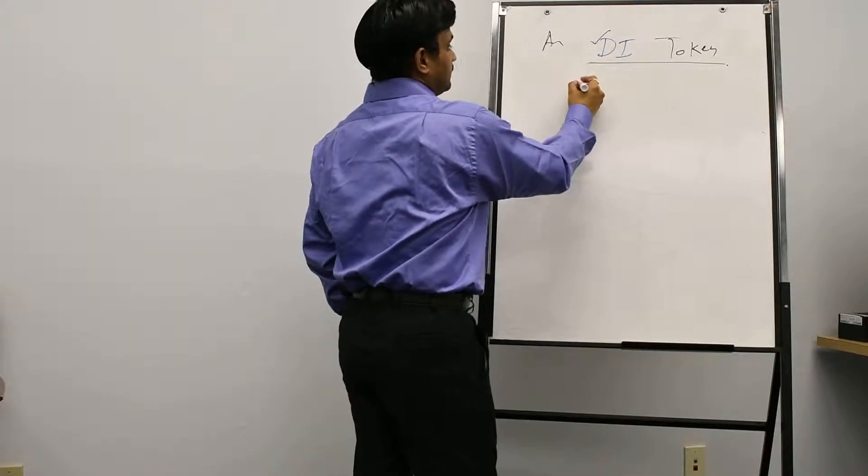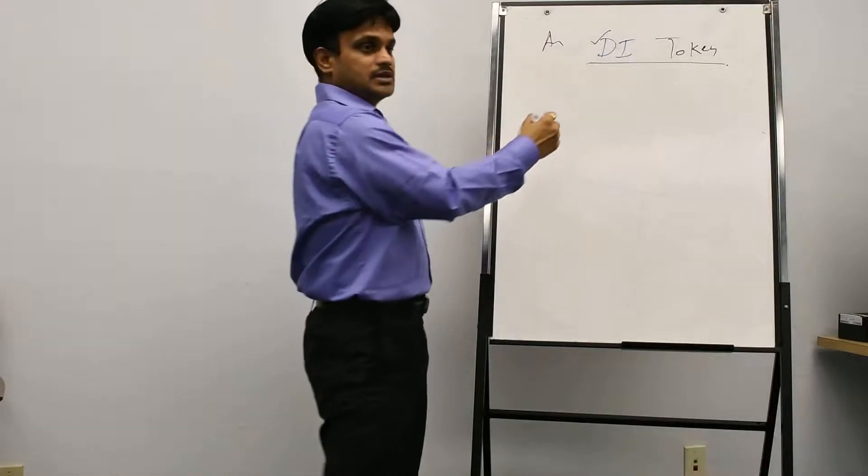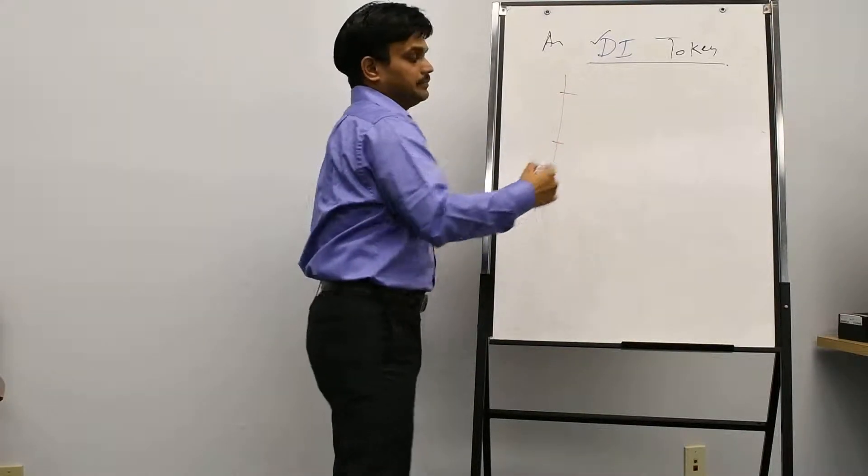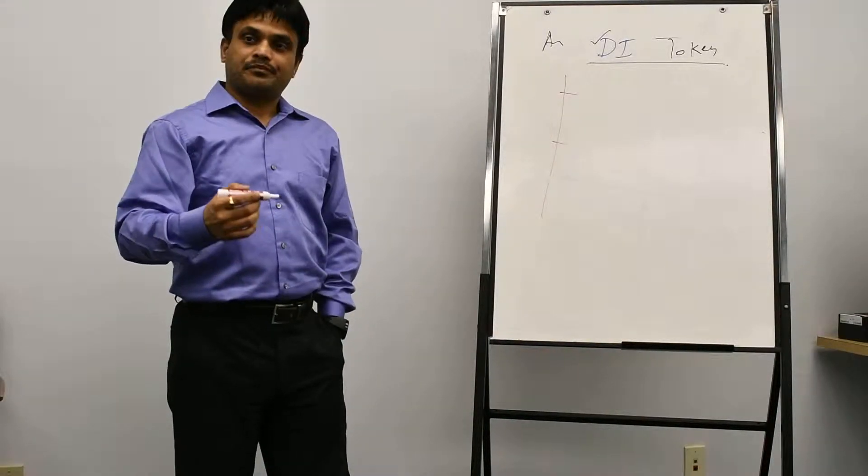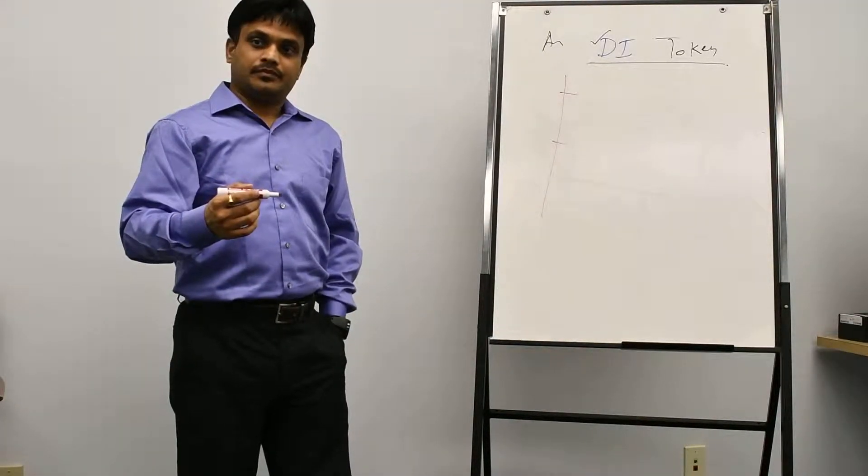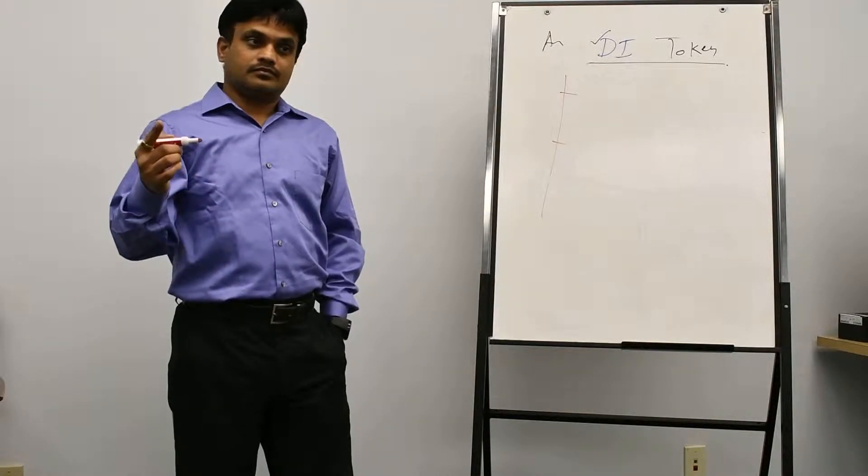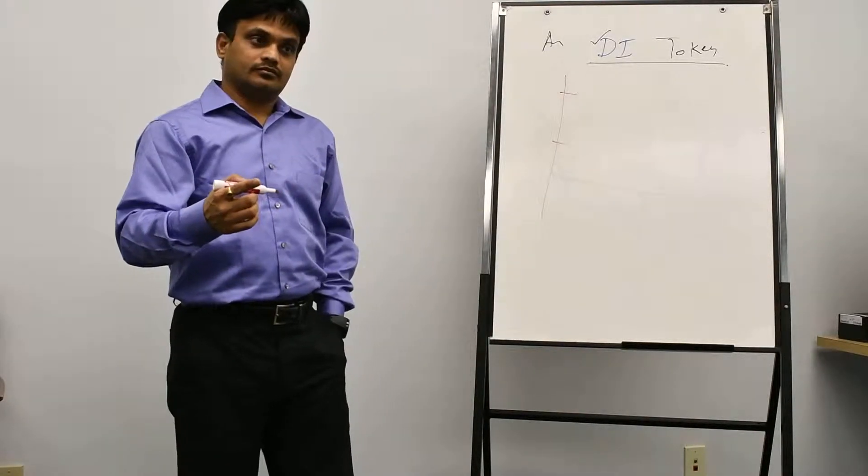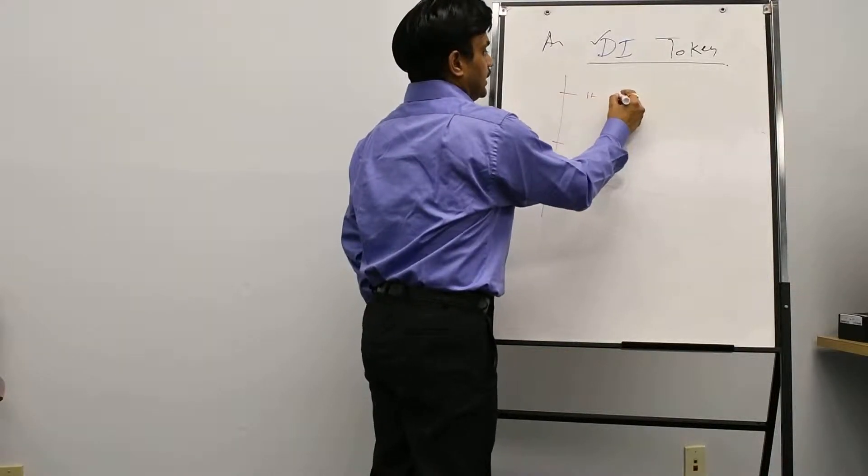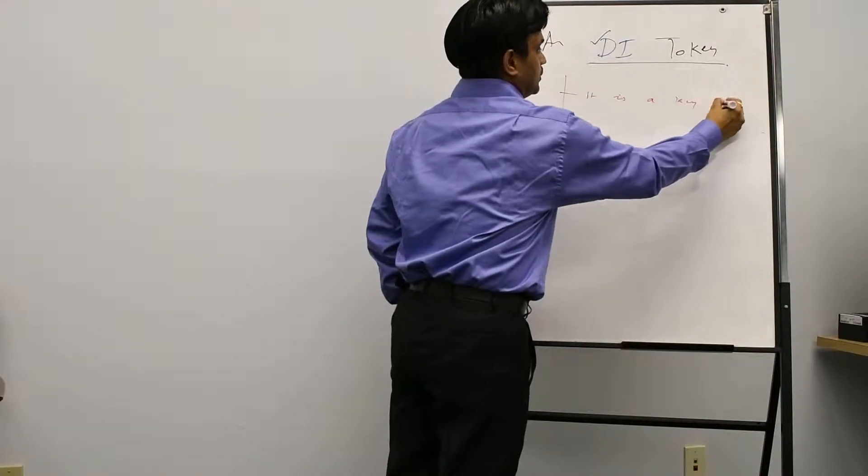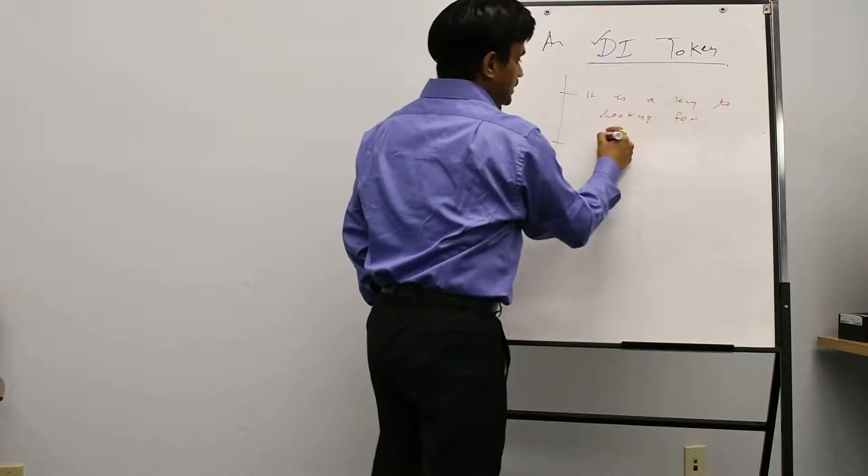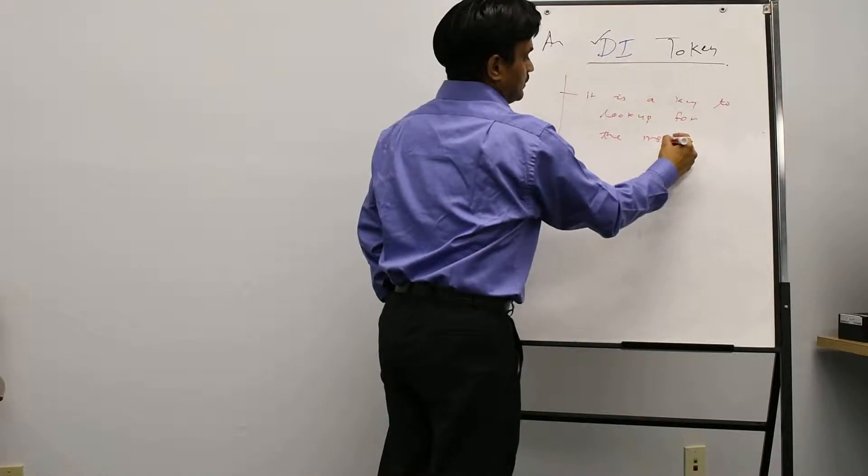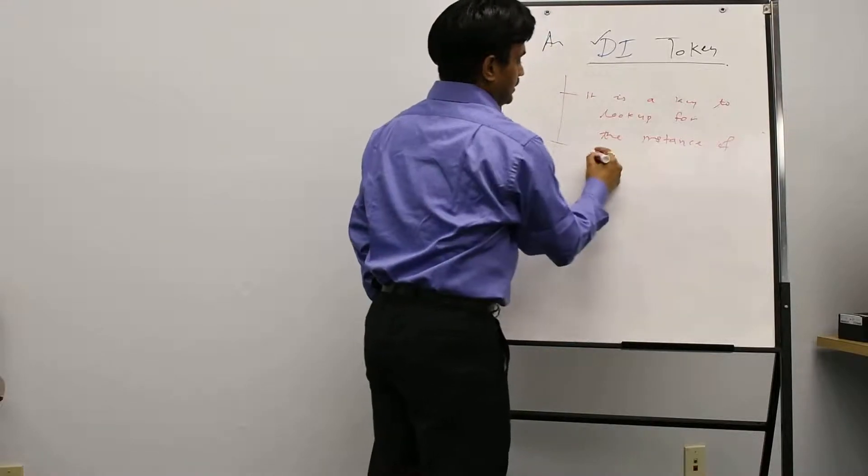So basically what is DI token? The thing which can be used to give it as a type. By giving a type we can get that instance. So it is a key to look up for what? For the instance of the dependency.